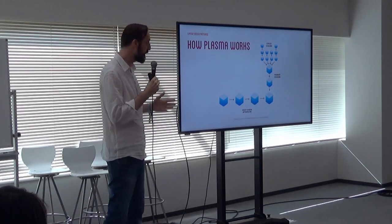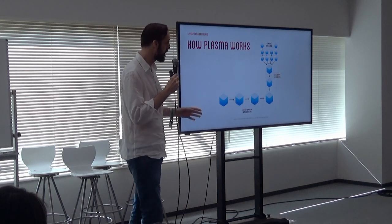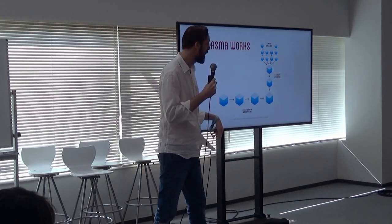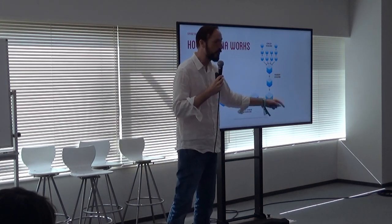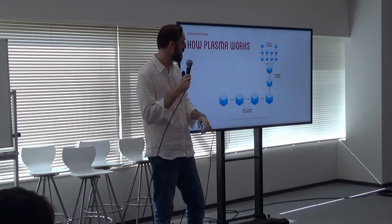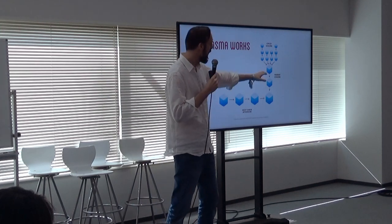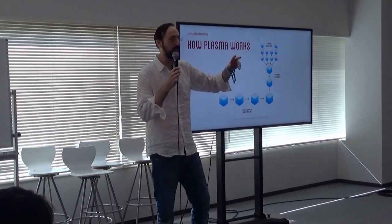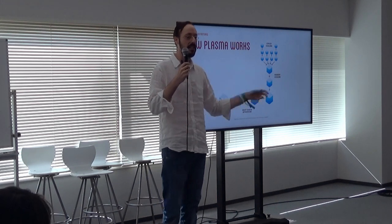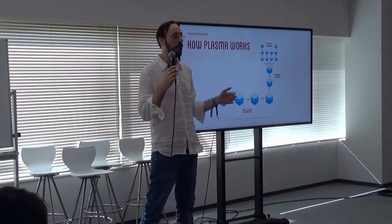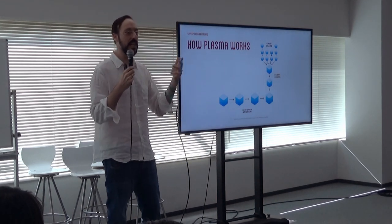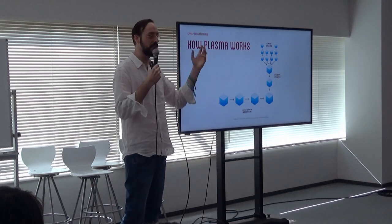Plasma is a little bit different but has the same concept. You have the main layer 1 chain where you have a contract. You deposit tokens and ether there as well. And what happens off-chain is actually another chain that has a faster throughput — they have fewer validators. You can have like 2,000 transactions per second.